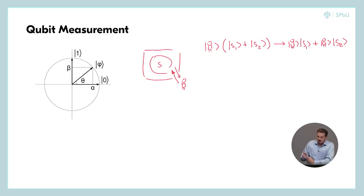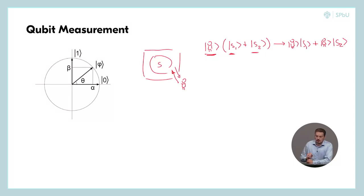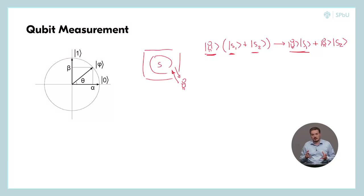Now, what we can tell about this measurement process. First, we understand that the observer can choose the states he is going to distinguish — so it is the choice of the basis, or the choice of observable operator, as physicists call it. And after measurement, the observer subjectively obtains one of these states — one of these basis vectors. And this is a very important point.